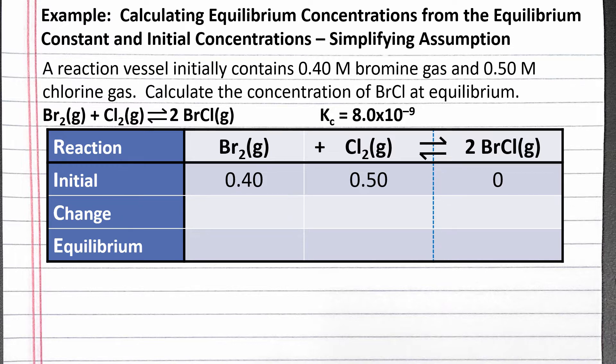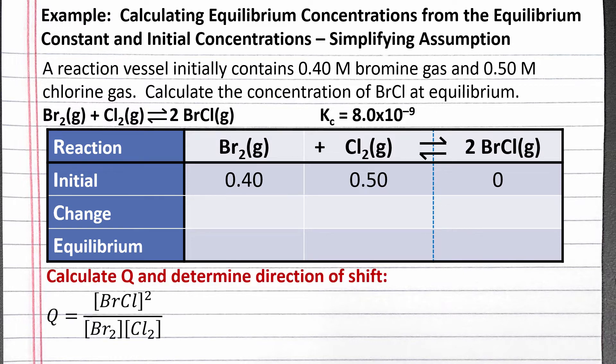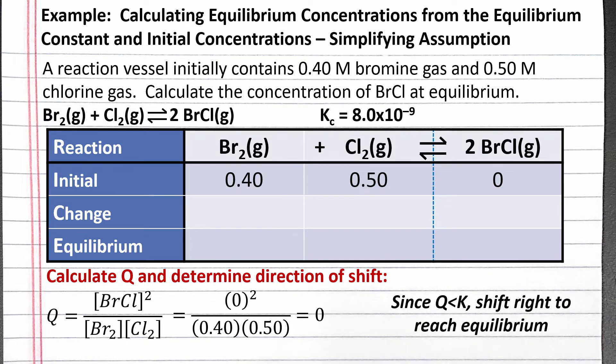To determine the change in concentration, we need to calculate the reaction quotient to determine which direction the reaction will shift to reach equilibrium. When calculating the reaction quotient Q, we use the equilibrium constant expression but substitute in the current concentrations. Since we don't have any product to begin with, our reaction quotient is 0. The reaction quotient is smaller than the equilibrium constant, so we need to shift to the right to reach equilibrium.